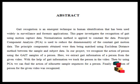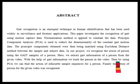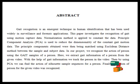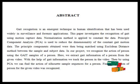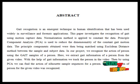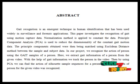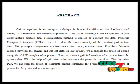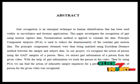Gait recognition is the process of recognizing individuals by their distinctive walk, capturing a sequence of images to derive and analyze motion characteristics. A person's gait can be hard to disguise because a person's musculature essentially limits the variations of motions, and measuring it requires no contact with the person. However, gait can be obscured if the individual, for example, is wearing loose-fitting clothes.